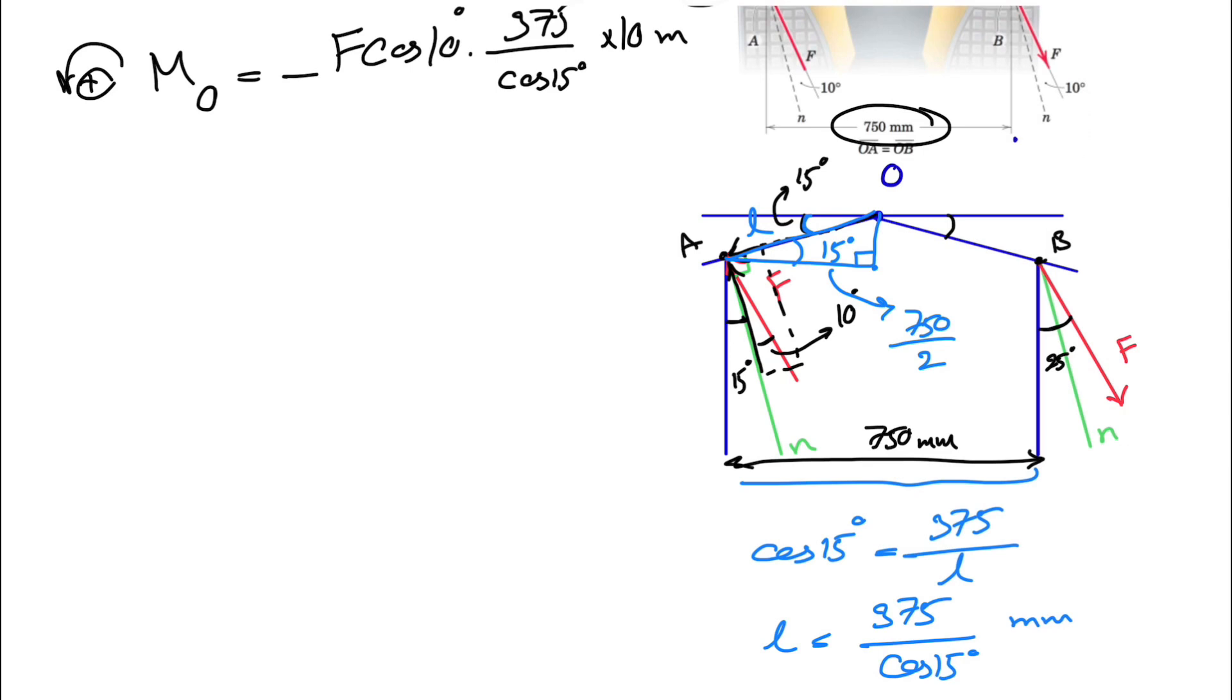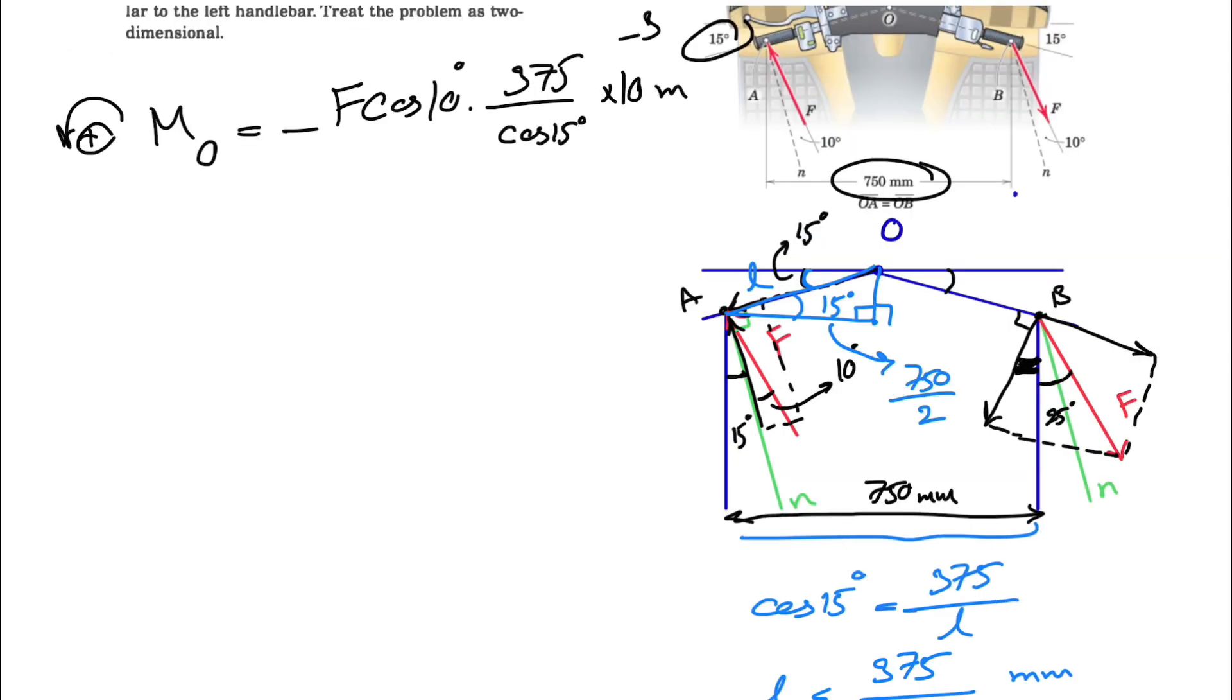That's the moment of the force applying at point A. Now we can move on to the force at point B. Again, if we can find the vertical component, this will be perpendicular to the right handlebar. All we need to find here is this angle.